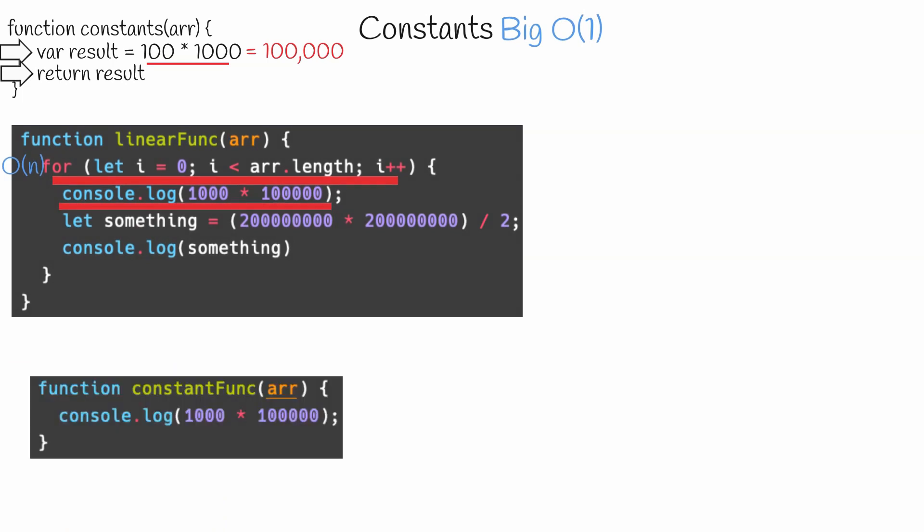Let's for one second, pretend that we have a function that contains only this line. Now, as you can see with this function, we pass in an array, but the function does nothing with the array. The only operation within the function is constant because it doesn't scale with any input.